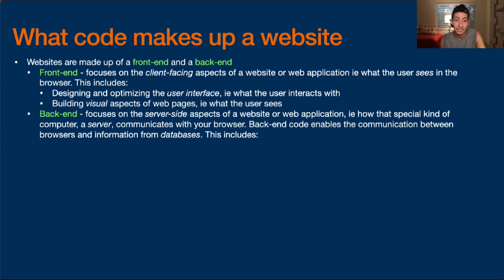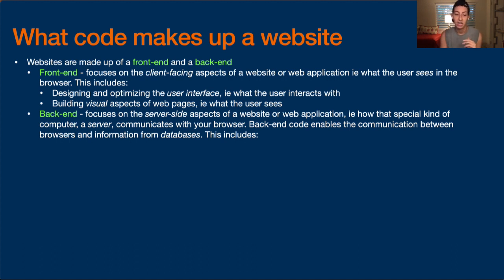The back-end focuses on the server-side aspects of a website or web application — how that special kind of computer, a server, communicates with your browser. Back-end code enables the communication between browsers and information from databases. When you have an application running on your machine, all the code is on your machine, self-contained. You might understand that you don't need an internet connection to run Microsoft Word — to write, edit, or save a document. That is all self-contained on your machine. A website, on the other hand, requires an internet connection because you're communicating with someone else's computer or a server.